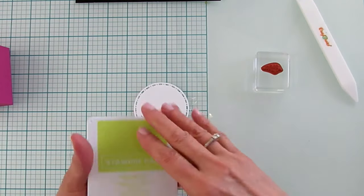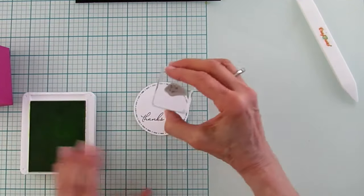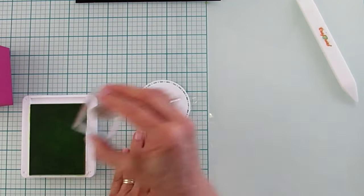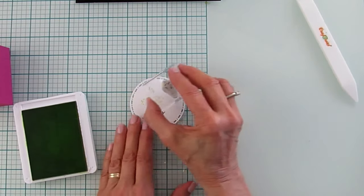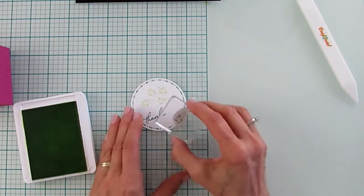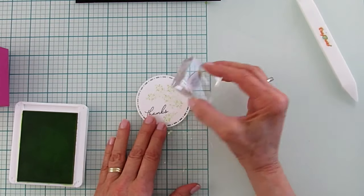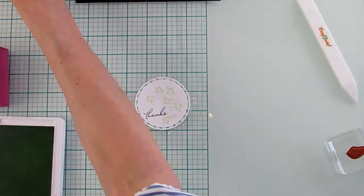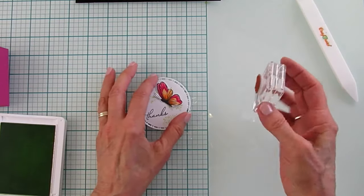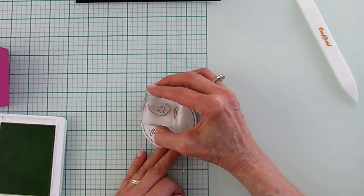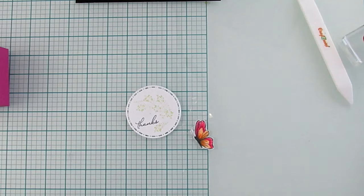Then we're going to use some Lemon Lime Twist, because it has the Lemon Lime Twist in this paper. And we're just going to add some little splatters, kind of, underneath the butterfly. I think that's going to be enough. Let me grab the butterfly and see if we need a couple more. Yeah, let's just do a couple more up here. I just think it adds a lot to this butterfly. It's really pretty.